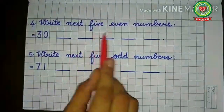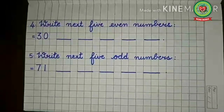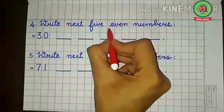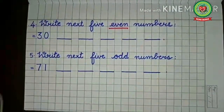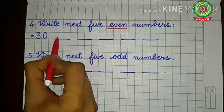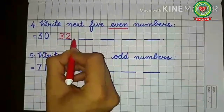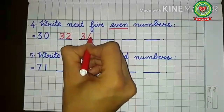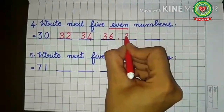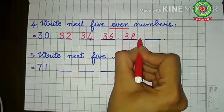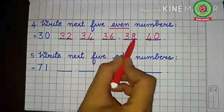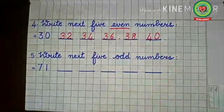Now let's use a different method: write the next five even numbers after thirty. Remember the pattern of skipping one digit each time. Thirty is already even, so skip thirty-one and write thirty-two. Skip thirty-three, write thirty-four. Skip thirty-five, write thirty-six. Skip thirty-seven, write thirty-eight. Skip thirty-nine, write forty. To check your answers, see the last digits: two, four, six, eight, zero — all even.